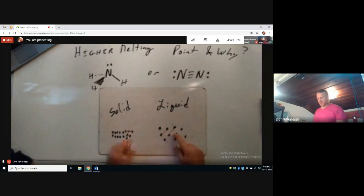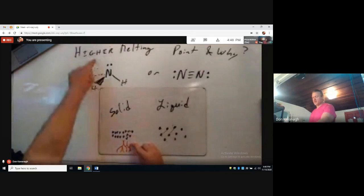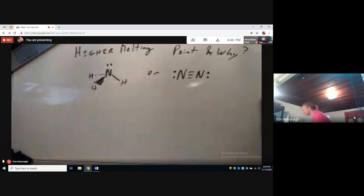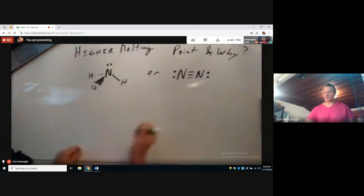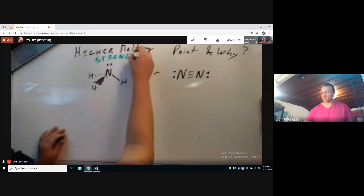The solid that has the higher melting point will have the stronger interactions. If the interactions are strong, it will take a lot of heat and have a higher melting point. So we are going to analyze these two, and the one that has the higher melting point will have the stronger intermolecular force.